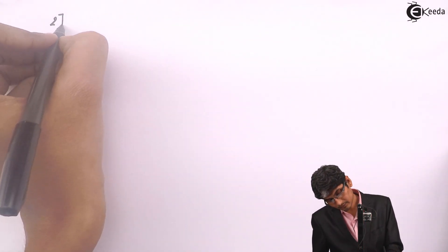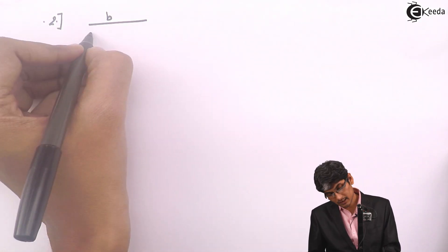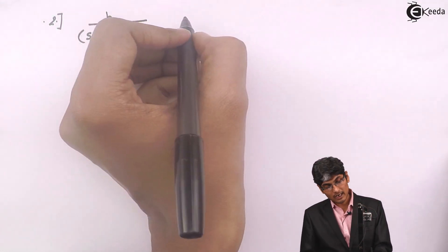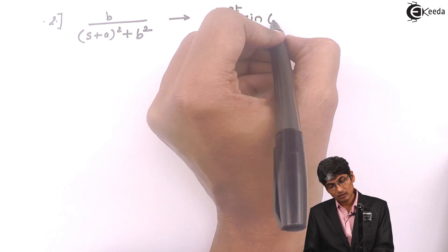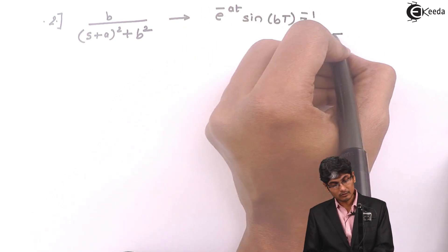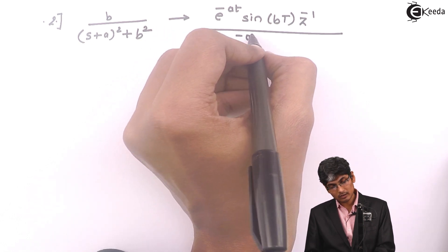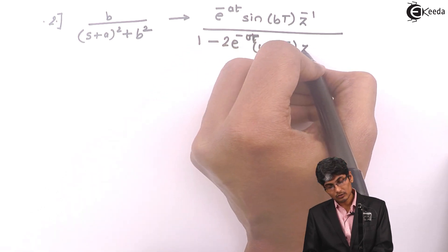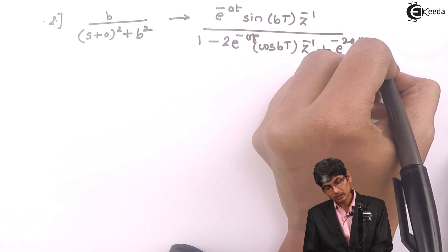Now let us see the second formula. In the second formula we have b / [(s + a)² + b²], and that will convert to [e^(-aT) sin(bT) · z⁻¹] divided by [1 - 2e^(-aT) cos(bT) · z⁻¹ + e^(-2aT) · z⁻²].